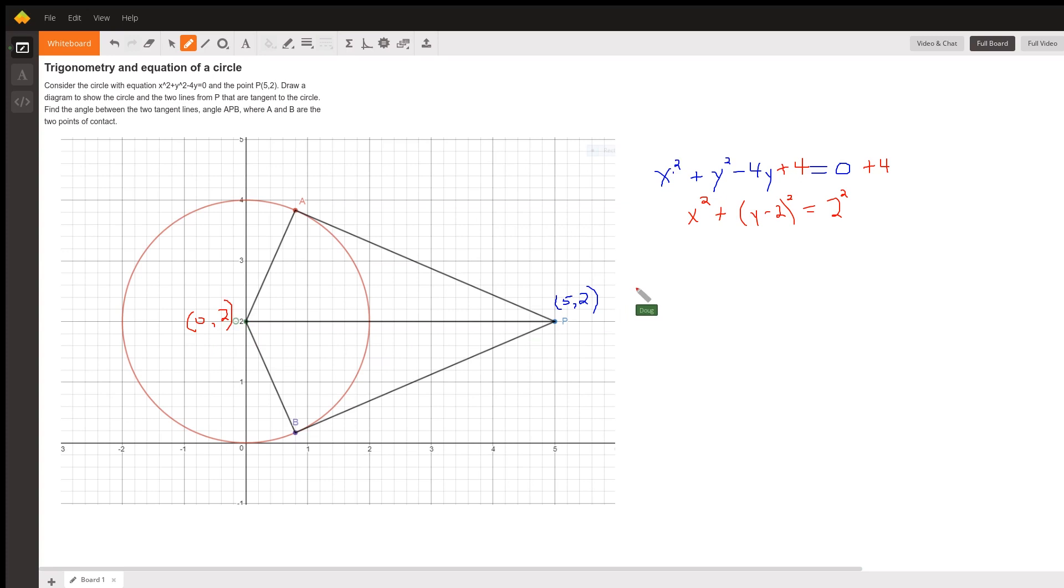The other thing you have to know is that when you draw a tangent to a circle from an external point, the radius drawn to the point of contact is perpendicular to the tangent line.